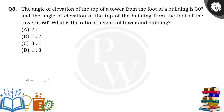The angle of elevation of the top of a tower from the foot of a building is 30 degrees, and the angle of elevation of the top of the building from the foot of the tower is 60 degrees. What is the ratio of the height of the tower and the building?